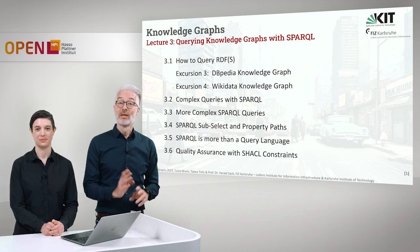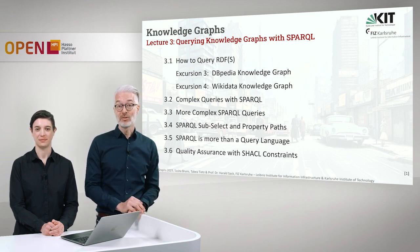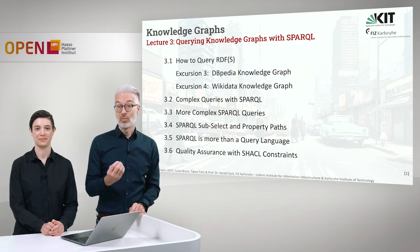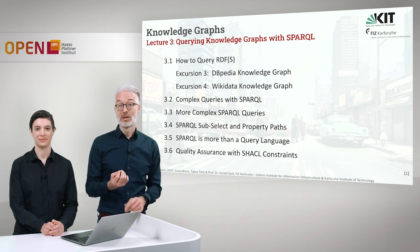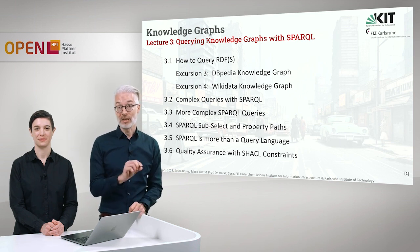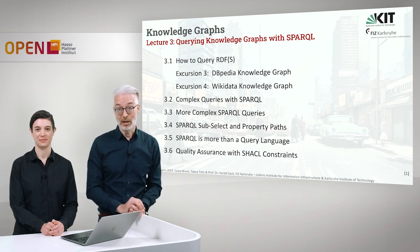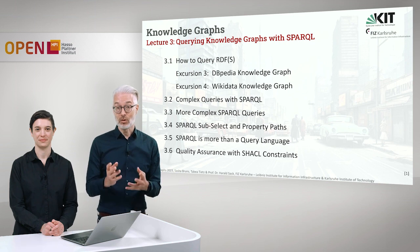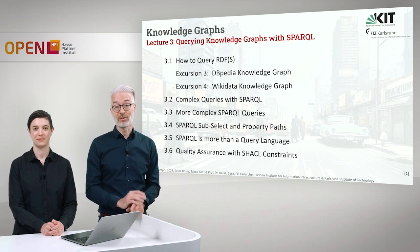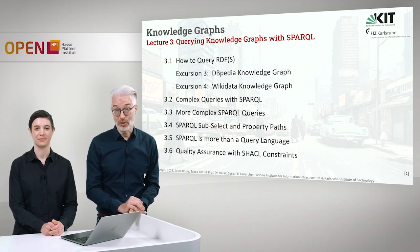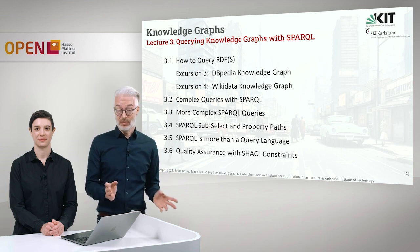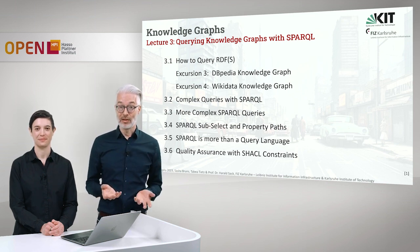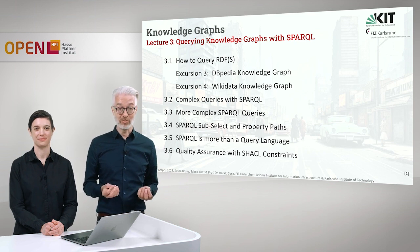The similarity to SQL you also see in the next chapter when we are talking about sub-select queries. But what is typical for graph query languages is that we can follow paths in the graph, so-called property paths in SPARQL, which is the subject of section 3.4. Besides all the query capabilities of SPARQL, SPARQL is more than just a query language.